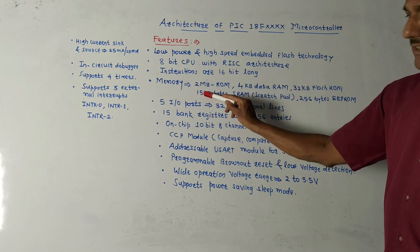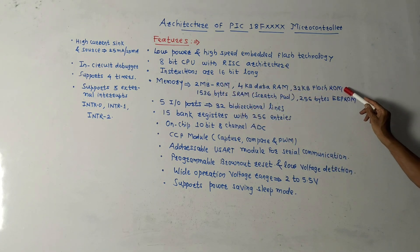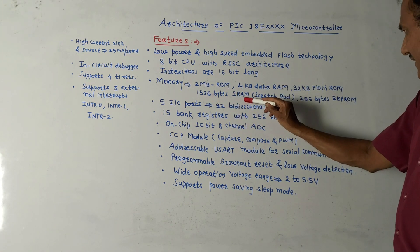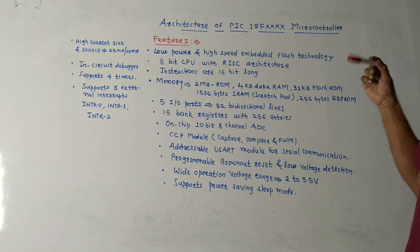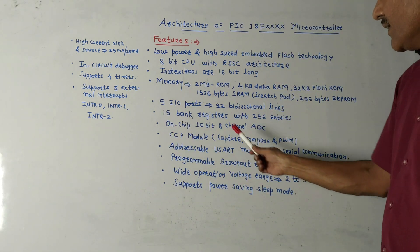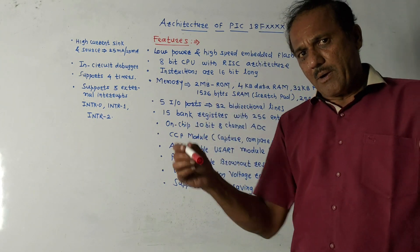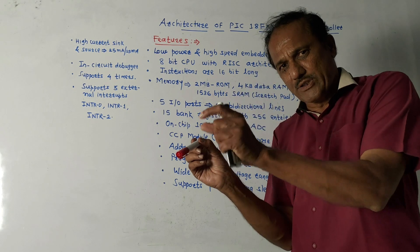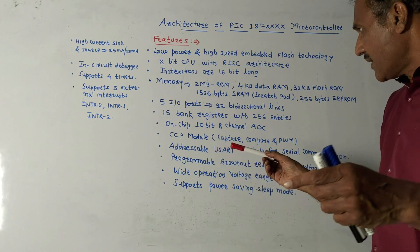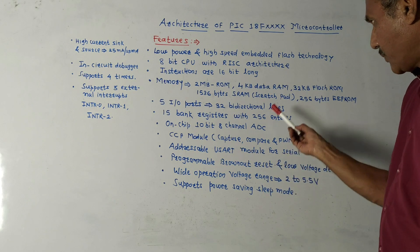It makes use of memory which contains 2 megabytes of ROM, then 4KB data RAM, 32KB flash ROM, 1536-byte scratch pad area or SRAM and 256-bytes EEPROM, which is used to store some critical information. It makes use of 5 input and output ports. Port A, port B, port C, port D and port E. There are 5 input output ports.